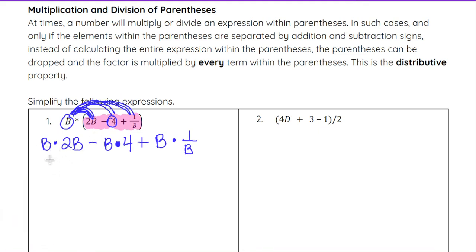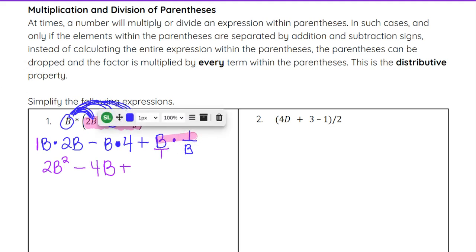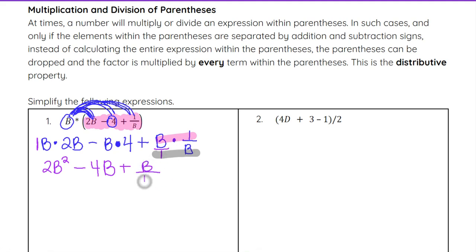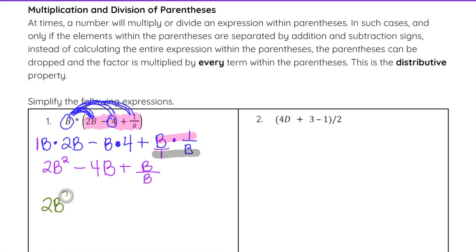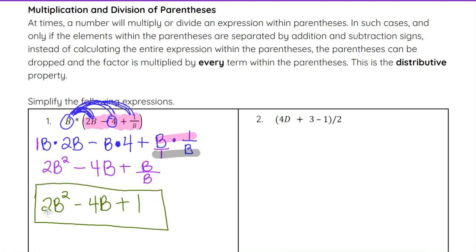To simplify: b times 2b is 2b squared, because b times b is b squared and the coefficient is 1 times 2 equals 2. Then we have minus b times 4, which is minus 4b — typically you put the number first and then the variable. Plus b times 1 over b: putting b over 1, we multiply across top and bottom to get b over b, which simplifies to 1. So we leave 2b squared minus 4b plus 1.